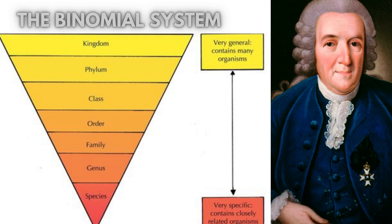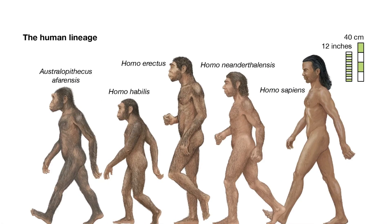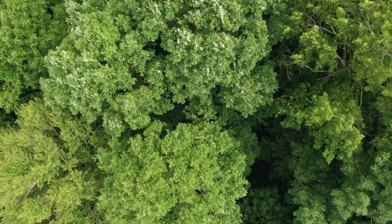The most famous name is probably the name he gave humans: Homo sapiens. Homo is the genus that includes modern humans and closely related species like Homo neanderthalensis, also known as Neanderthals.